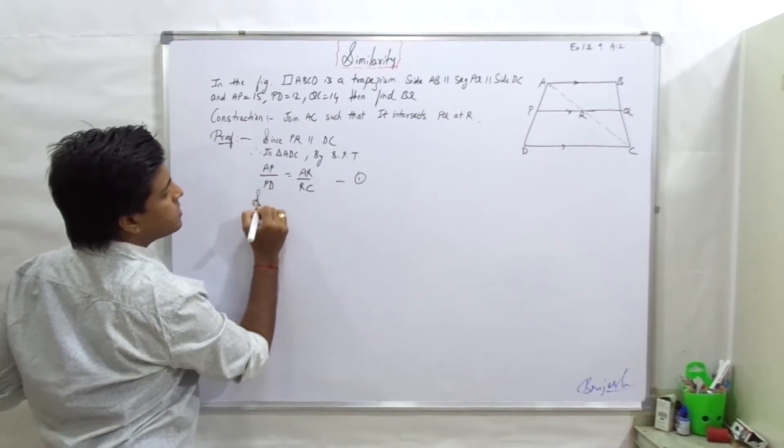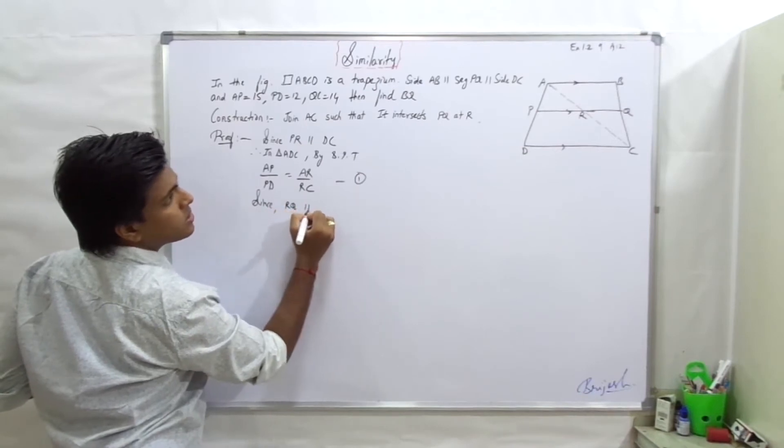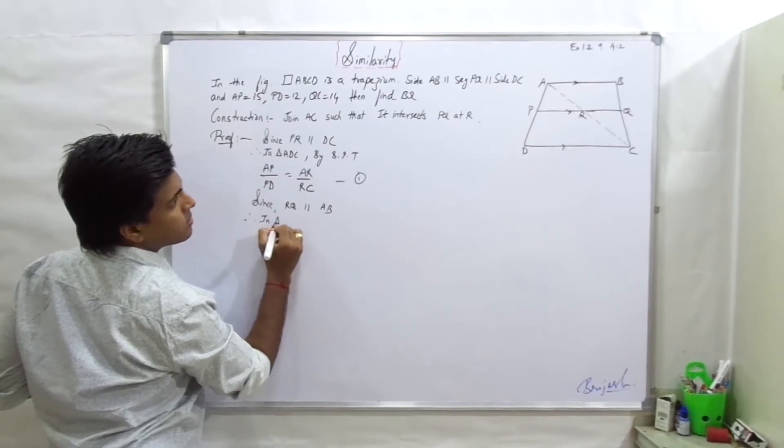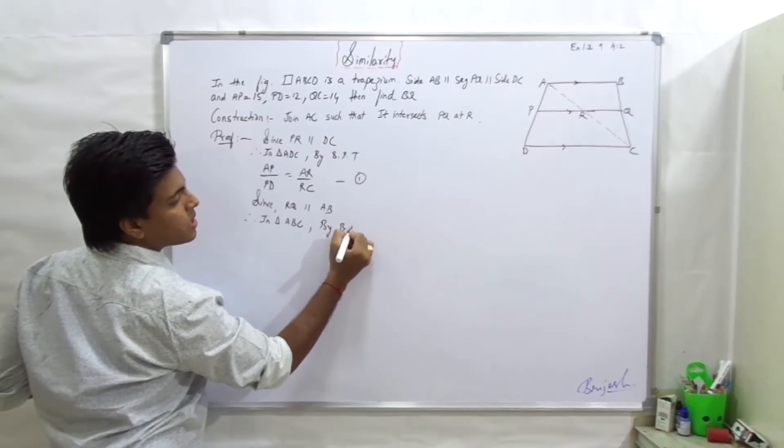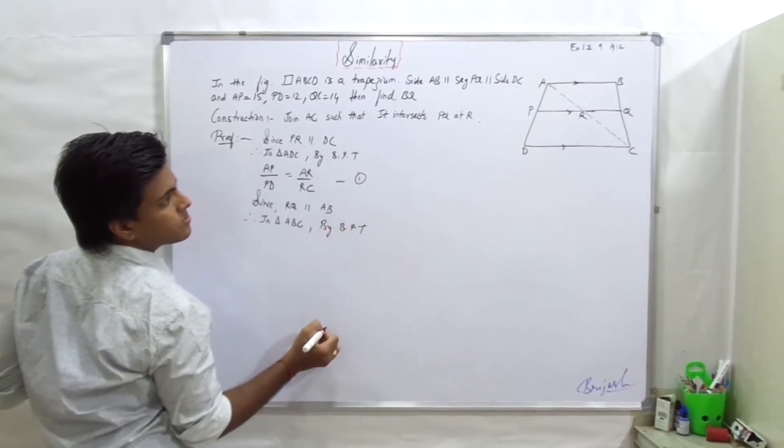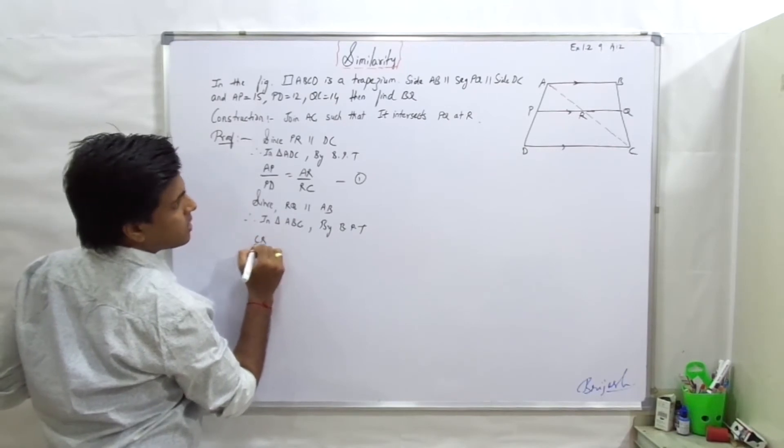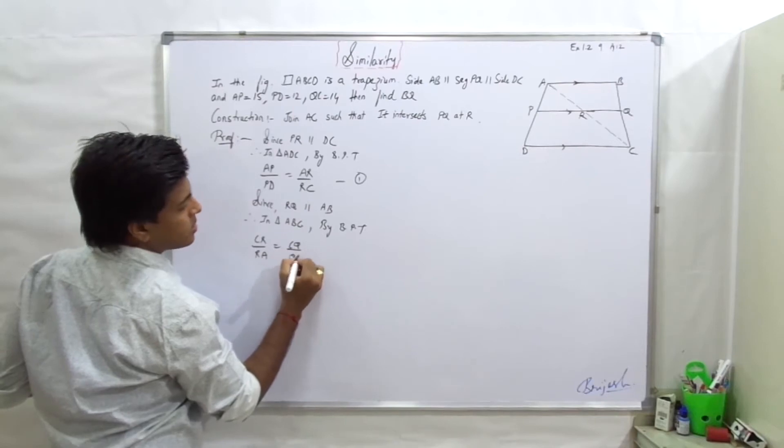Since RQ is parallel to AB, therefore in triangle ABC by basic proportionality theorem, CR upon RA equal to CQ upon QB.